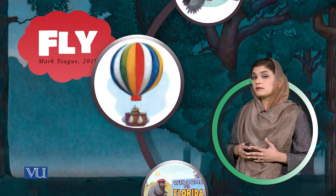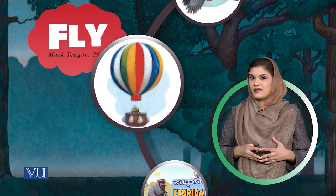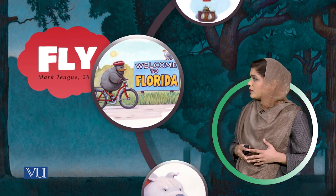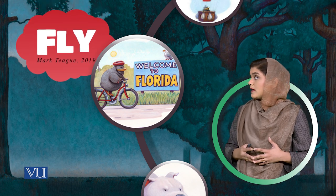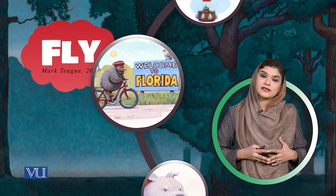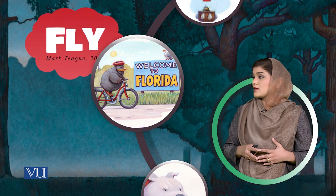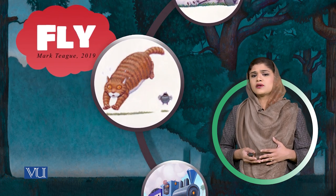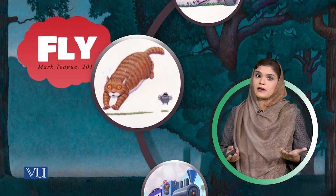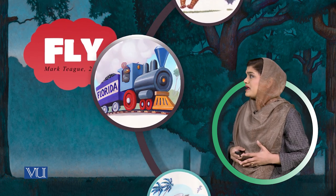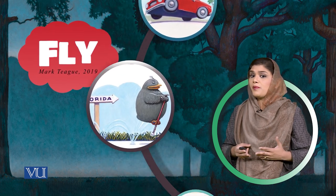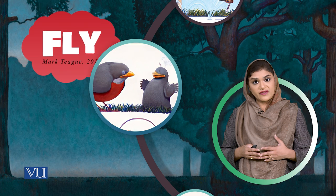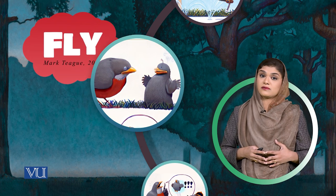Then comes the second suggestion: what about a parachute? Mother bird thinks that is not possible. Then she starts sharing the story of the mother. The baby bird asks: can we go to Florida on a bicycle? Mother bird gives suggestions and tells the baby bird that if it keeps giving such suggestions, many animals could be a threat to its life. Baby bird gives interesting suggestions: we can go by train, by car, by pogo stick. Finally, mother bird is convinced — the suggestions are interesting but not practical.